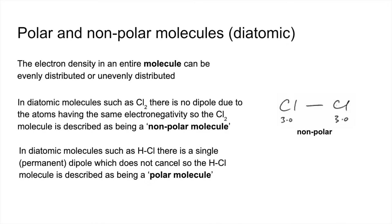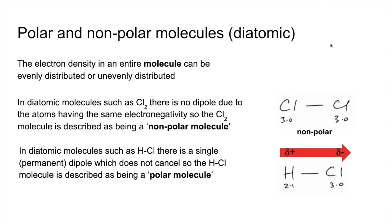In diatomic molecules like HCl, there is a single permanent dipole which doesn't cancel, so the HCl molecule is described as being a polar molecule. The hydrogen has the lower electronegativity of 2.1 and chlorine 3.0, so the chlorine has a greater share of the electron density. The dipole runs from left to right — slightly negative at the chlorine end, slightly positive at the hydrogen end.